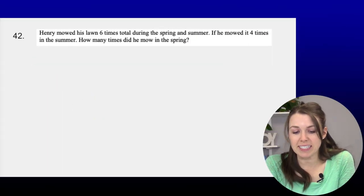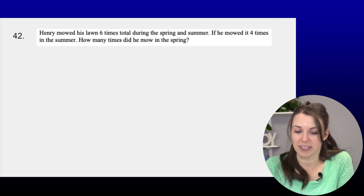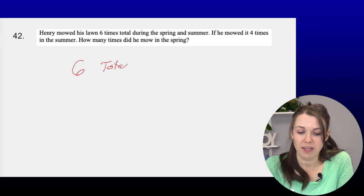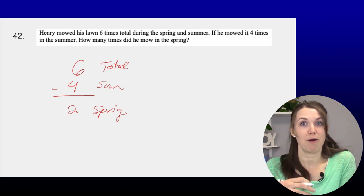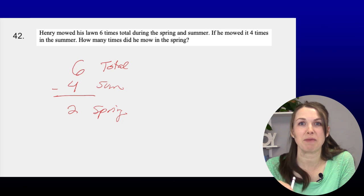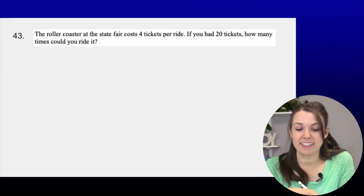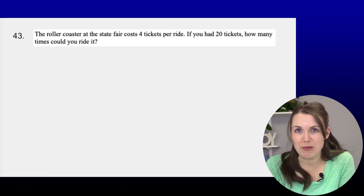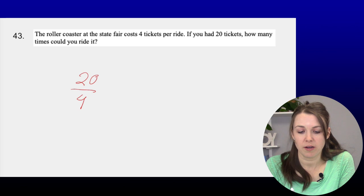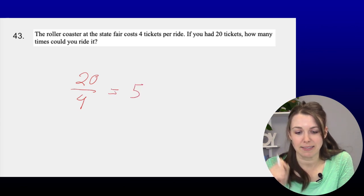Number forty-two: Henry mowed his lawn 6 times total during spring and summer. If he mowed it 4 times in the summer, how many times in the spring? Simply 6 − 4 = 2 times. Super easy! On the HiSET and GED tests, most problems will have multiple steps, not just simple one-step problems like this. Number forty-three: The roller coaster costs 4 tickets per ride. With 20 tickets: 20 ÷ 4 = 5 rides. Division is the operation here.